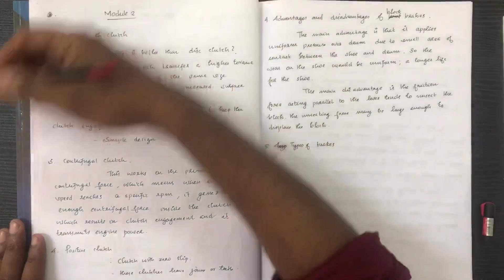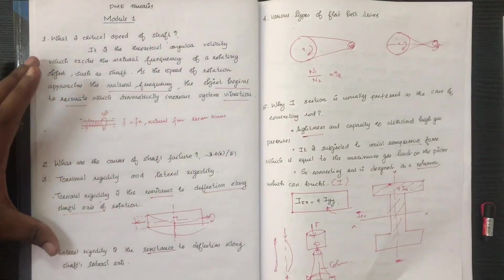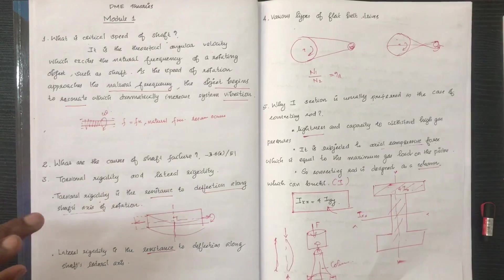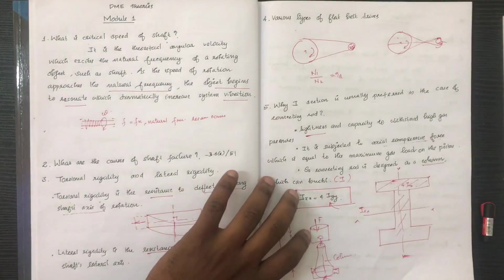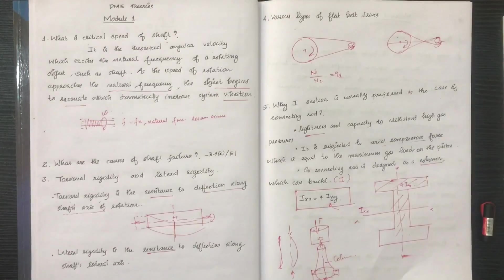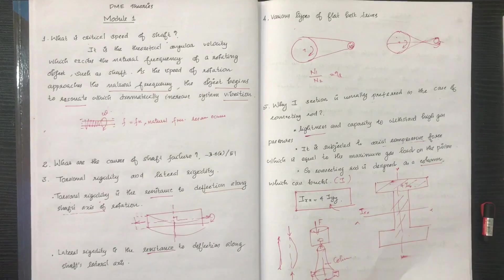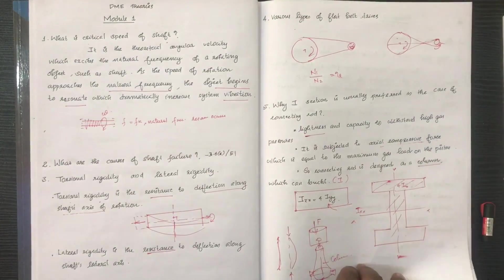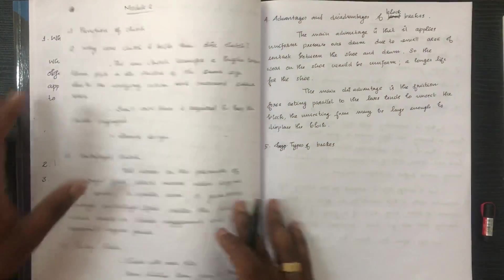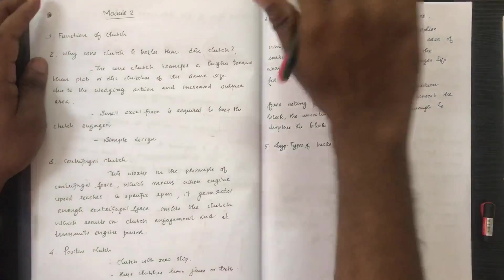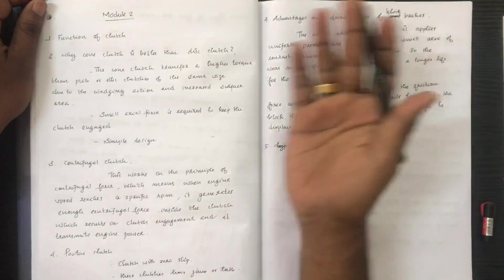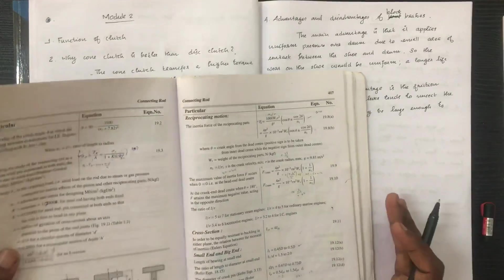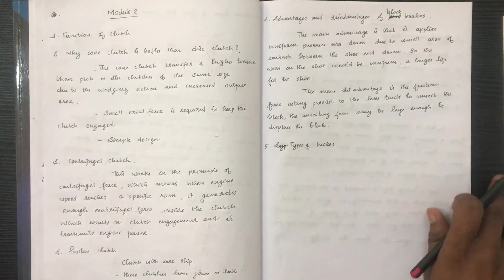The I cross-section condition gives minimum moment of inertia. Key considerations include lightness, capacity to withstand high gas pressure, and being subjected to axial compressive forces. In design, we need to apply all the relevant equations.